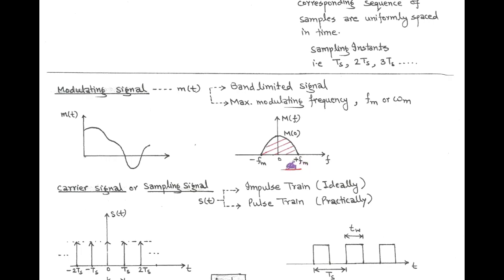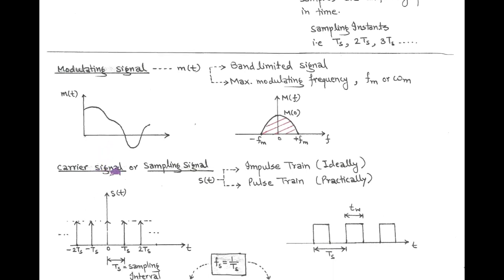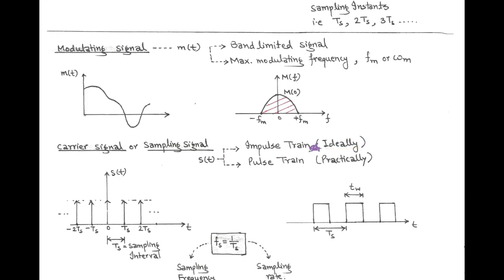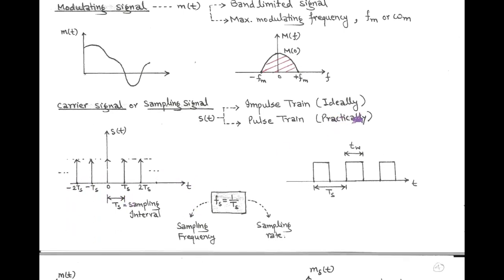Here we take only positive frequencies. For any arbitrary message signal m(t), we consider an arbitrary spectrum denoted by capital M(f). And in order to convert the continuous analog modulating signal into a discrete analog signal, we use a sampling signal, that is s(t). This sampling signal is also called the carrier signal. Ideally, an impulse train is used as the sampling signal, which has a periodic train of impulses at a fixed sampling period Ts, ranging from minus infinity to plus infinity. But practically, we use a periodic pulse train, and the width of each pulse is tw.